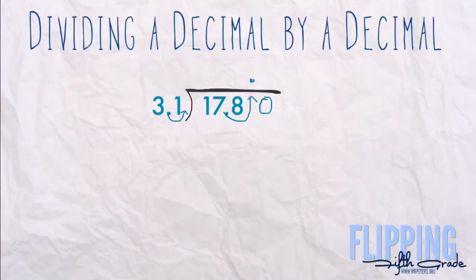Now we ask ourselves how many times does 31 go into 1? It doesn't. Does it go into 17? No. Does it go into 178? Yes. Now if you recall from the previous lesson, we're going to use estimating here. So we're going to round this 31 to 30 and we need a compatible number that's compatible with 3, that is 18.